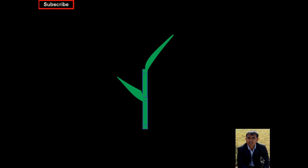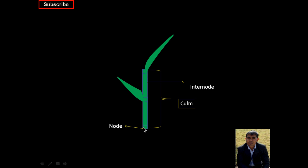Apart from this, there will be one other portion that is the rice culm. The rice culm is composed of internodes and nodes, and it is actually hollow — except at the node portion, where there will be a solid portion. Each node will have one leaf, and the leaf sheath will cover this culm.